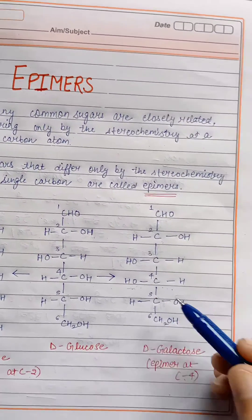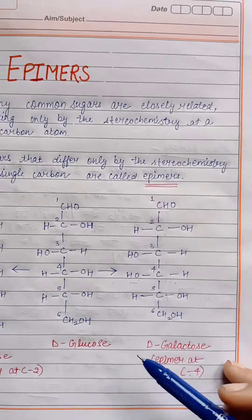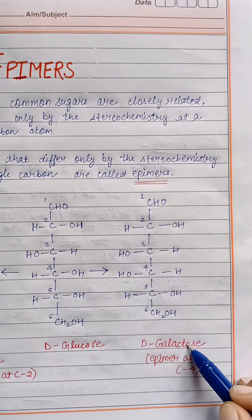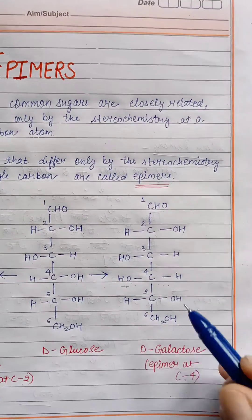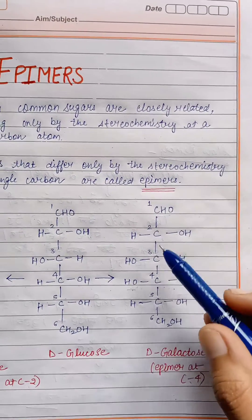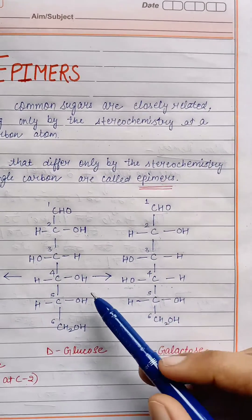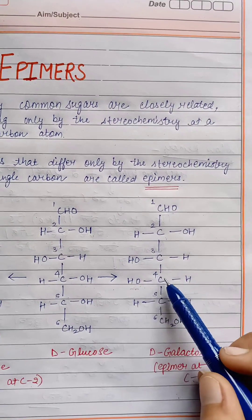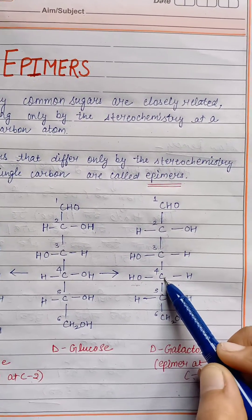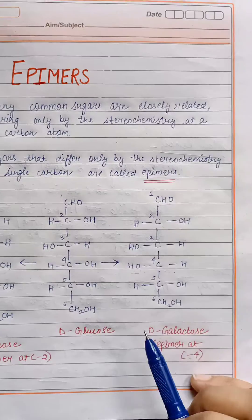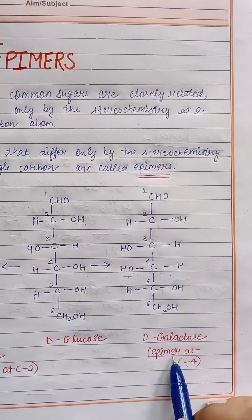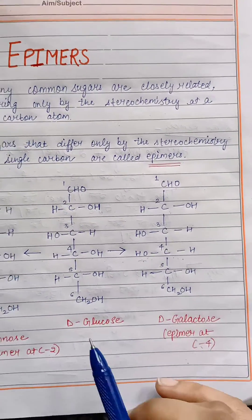As another example, consider D-glucose and D-galactose. These are also similar but vary at one position — that is carbon number 4. So these are epimers of each other.